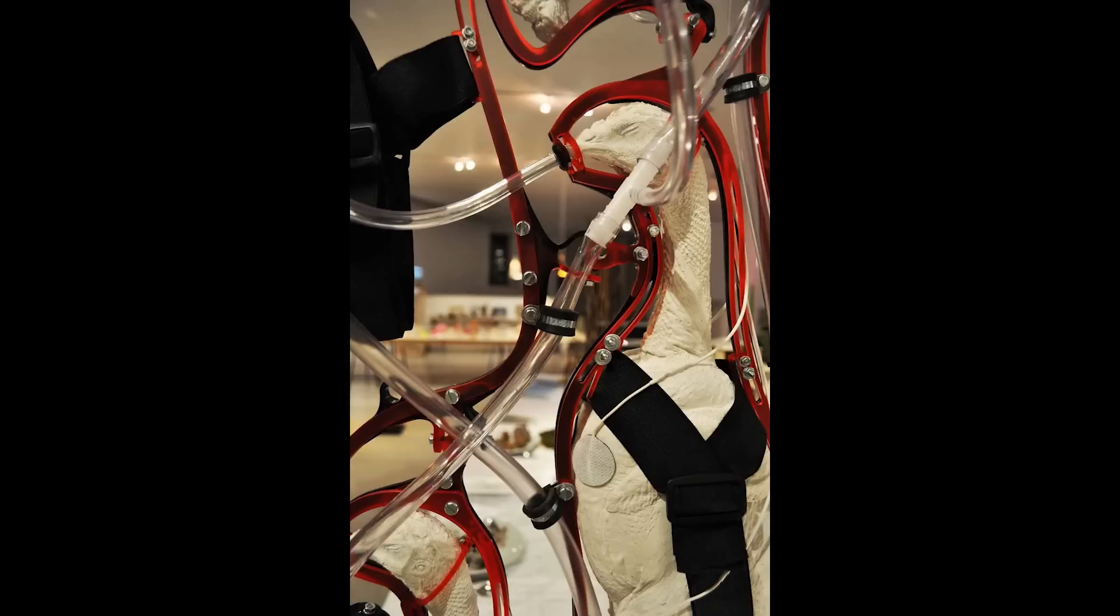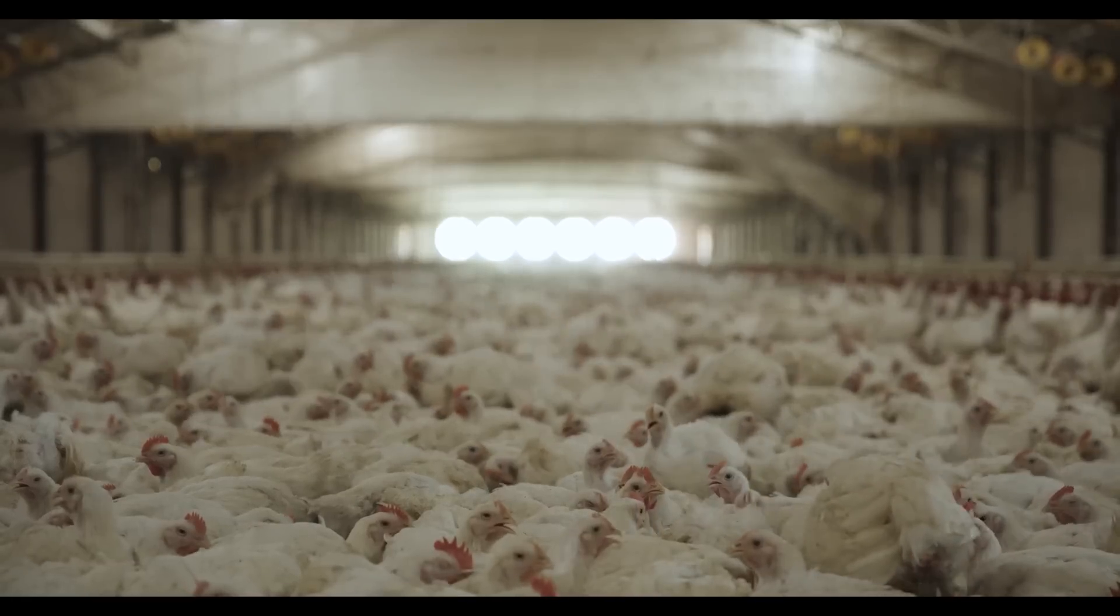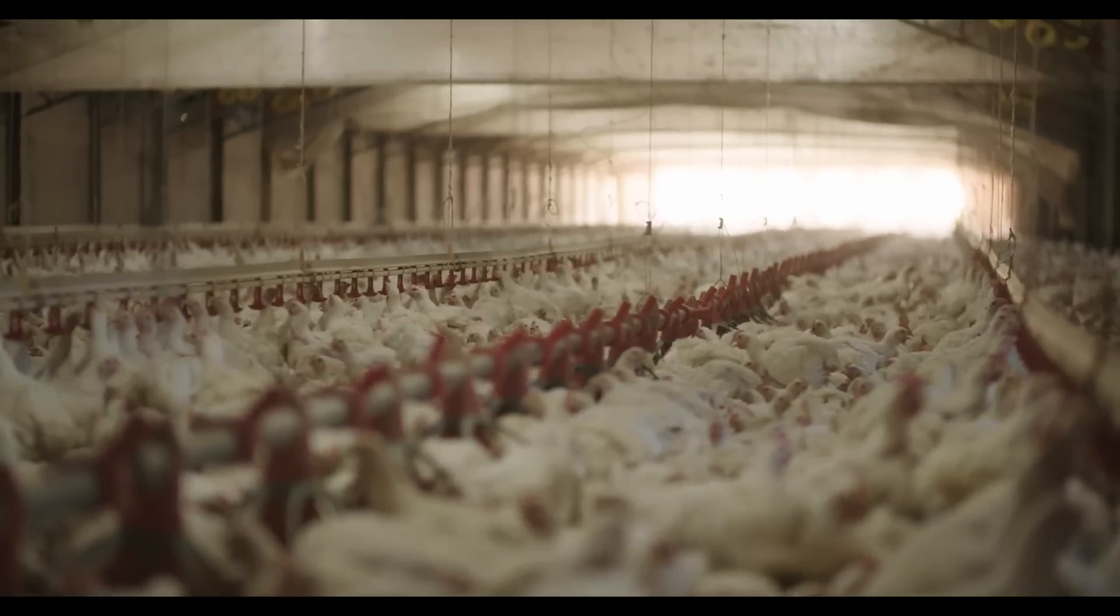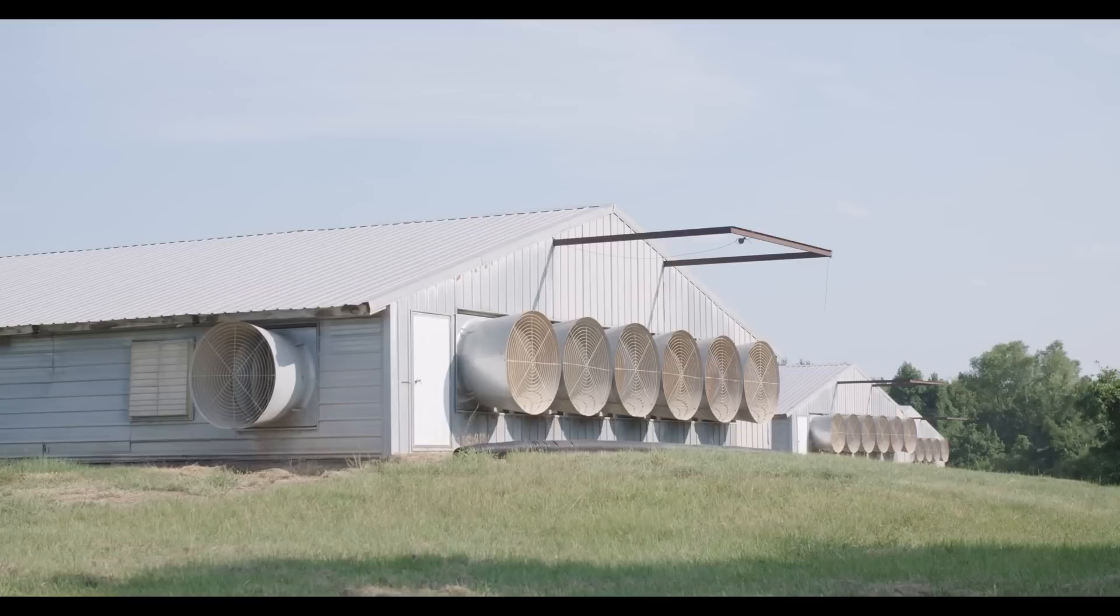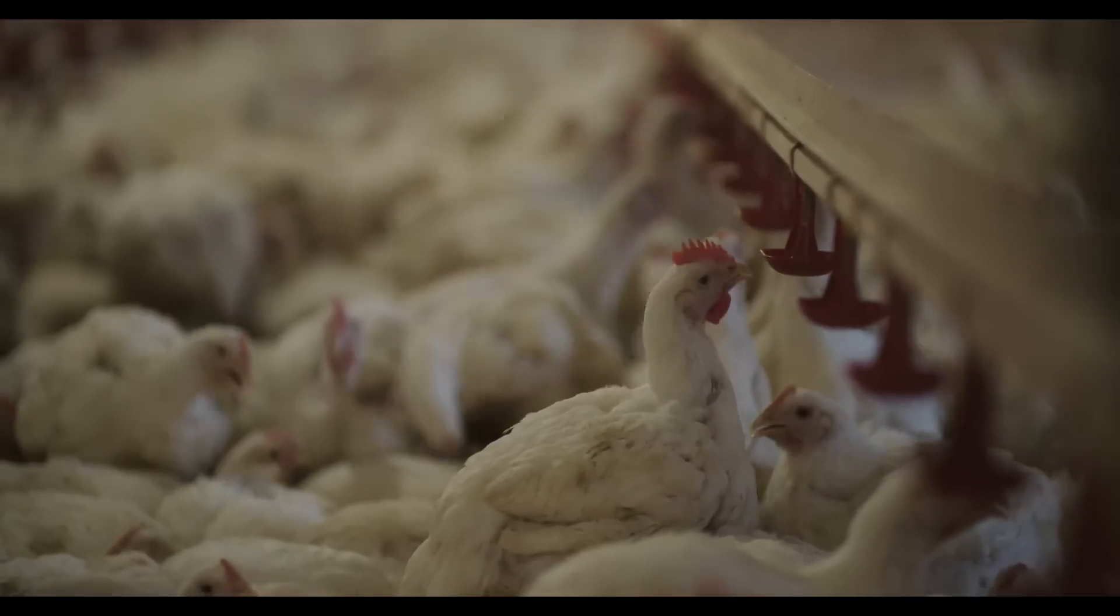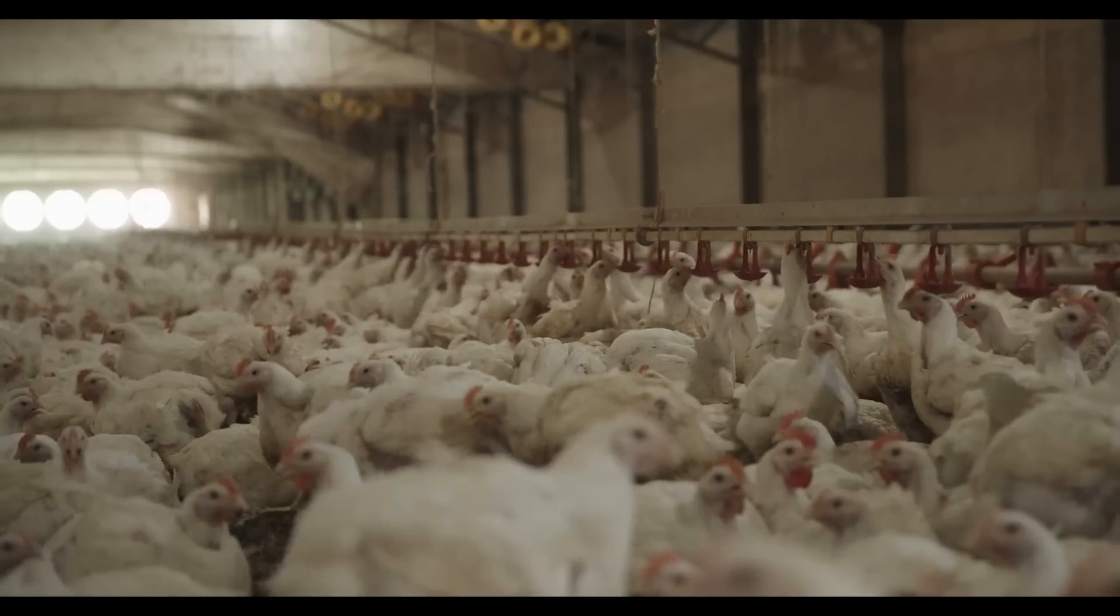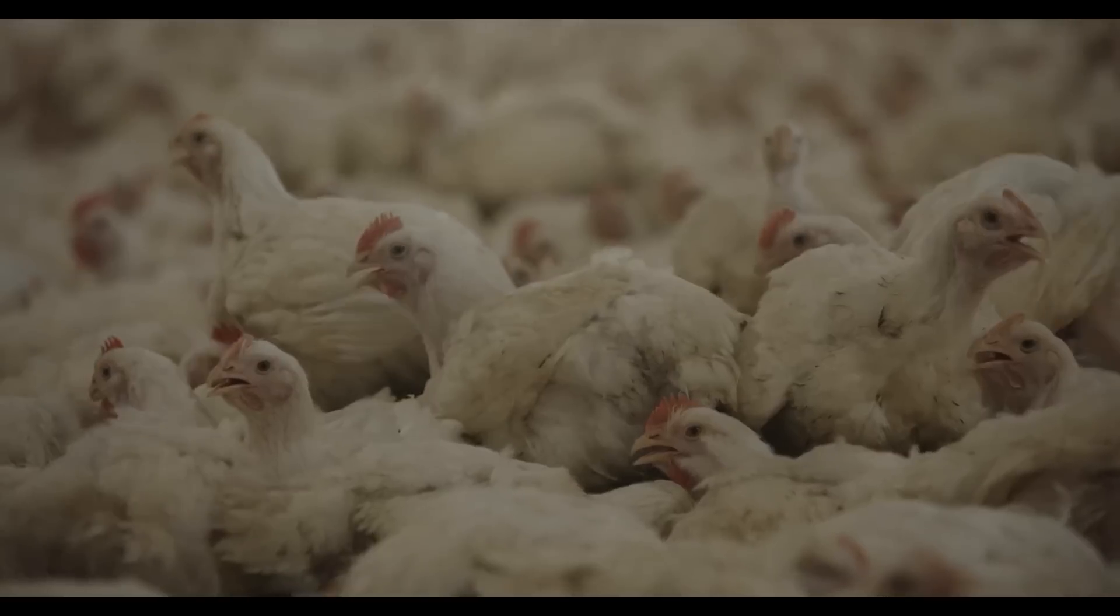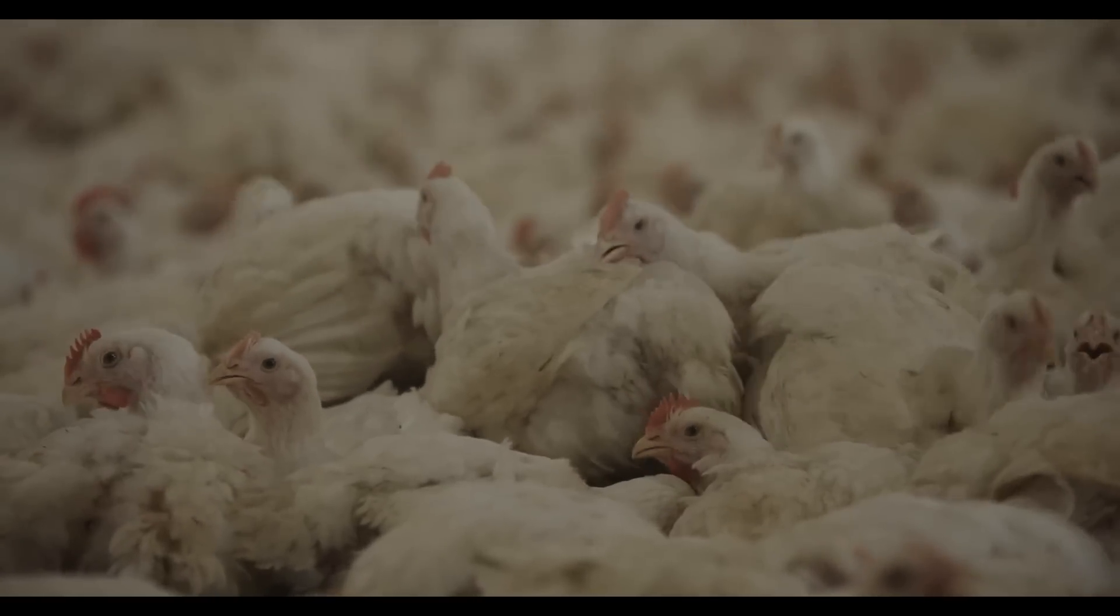However dystopian this proposed system feels, Ford claims that it is still much more humane than the current methods, where chickens are kept tightly in broiler houses not seeing sunlight throughout their seven-week lifespans. In this method at least, the chickens are oblivious to their terrible living conditions, as they are practically vegetables.